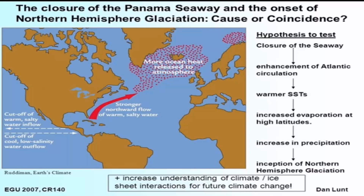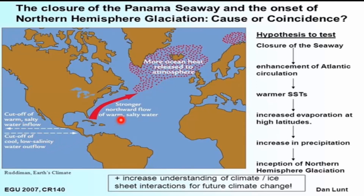The closure of the Panama seaway and the onset of northern hemisphere glaciation are linked. You can see that when the seaway closes, it results in enhancement of Atlantic circulation, leading to warmer sea surface temperatures, increased evaporation at high latitudes, increased precipitation, and inception of northern hemisphere glaciation. There is a cutoff of warm salty water inflow and a cutoff of cool low-salinity water outflow as the seaway closes.